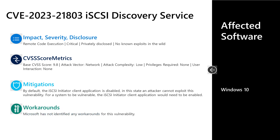Next is CVE-2023-21803, a critical remote code execution vulnerability in the iSCSI Discovery Service. It was privately disclosed to Microsoft with no known exploits in the wild. This has a base score of 9.8 out of 10. The attack vector is over the network, the attack complexity is low, privileges required is none, and user interaction is also none. This one has a couple of mitigations: the iSCSI initiator client application is disabled by default, so in order to exploit this, the iSCSI initiator must be enabled, which does take some extra steps.